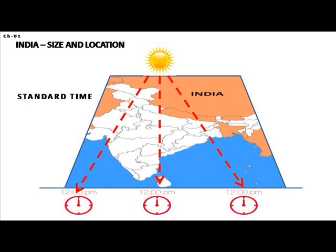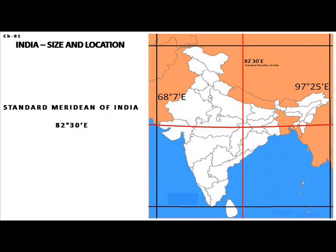Countries with a bigger longitudinal extent have more than one standard time. Russia has 11 time zones and the USA has five time zones. India has a single standard time along its standard meridian of 82 degrees 30 minutes East, passing through Mirzapur in Uttar Pradesh, known as Indian Standard Time.